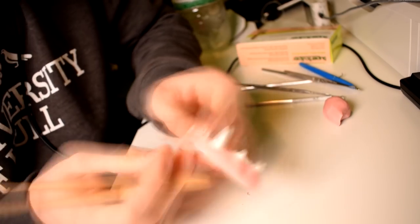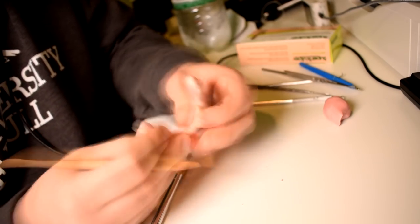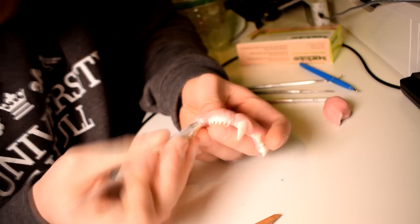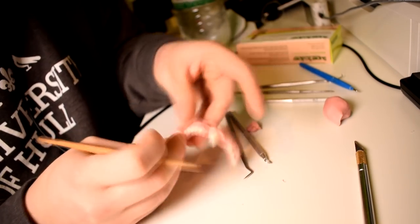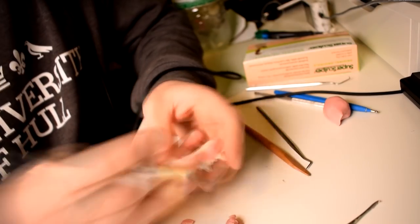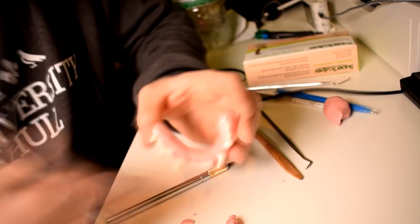A really important point to note as well is that you only need to boil this Super Sculpey and tiny little bit of Fimo, you only need to boil it for about three minutes for such a thin layer of Super Sculpey. Any more than that and it will become really brittle. So just a tiny little dip in the boiling water.